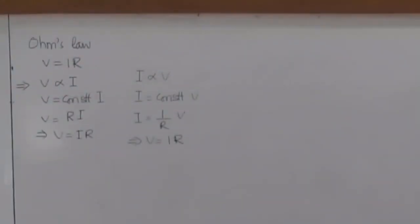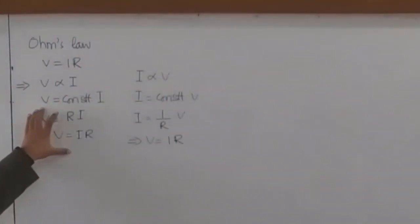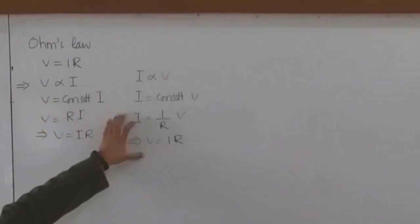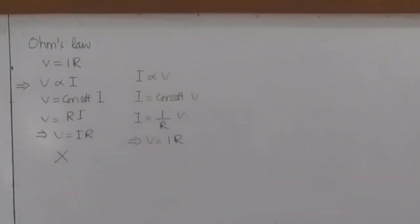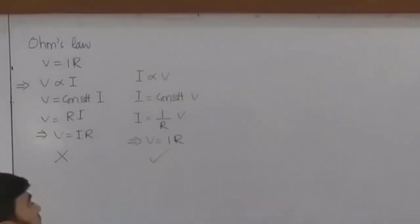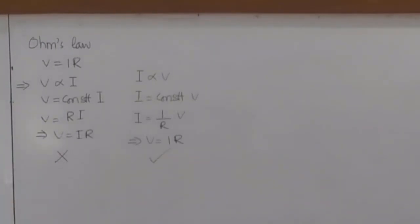Now the question is whether we should write V proportional to I, or I proportional to V. What is the correct way? I am saying that it is not right to write it one way, but the other way — and I will explain the reason and concept behind this.